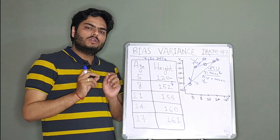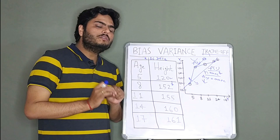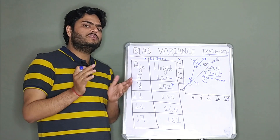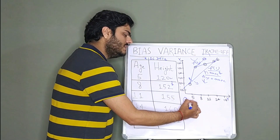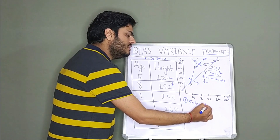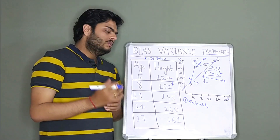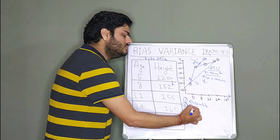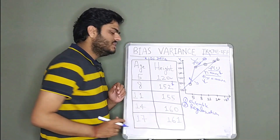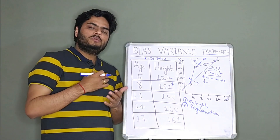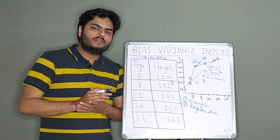Models with low bias will have high variance, and high bias models will have low variance. Ideally, we want low bias and low variance. To achieve that, you can use ensemble techniques like bagging, boosting, and stacking, which help in reducing both bias and variance. You can also use regularization in regression — techniques like Lasso and Ridge regression help in achieving lower bias and lower variance.